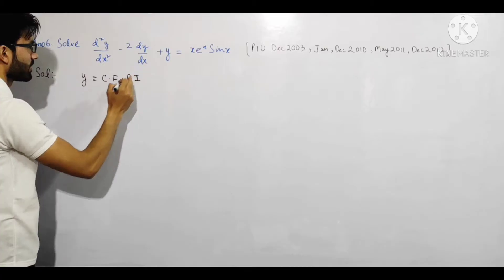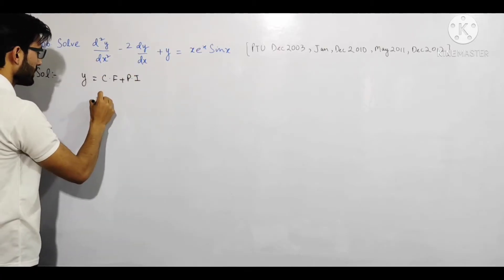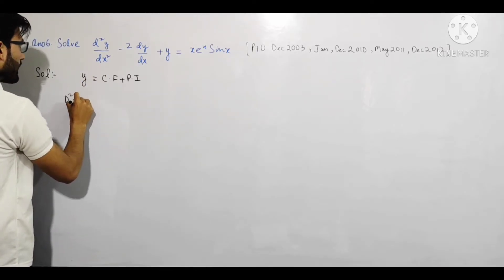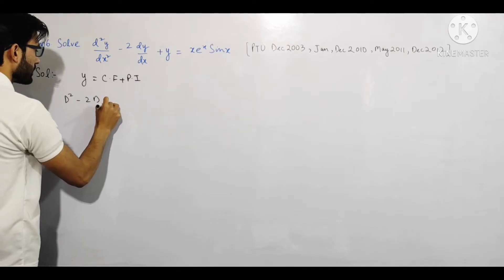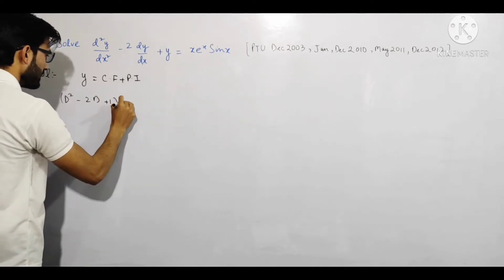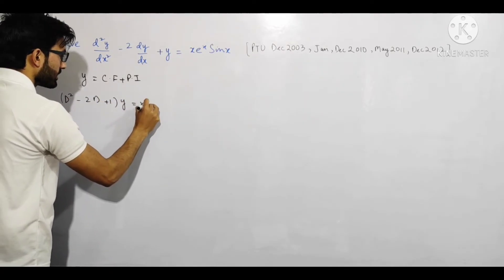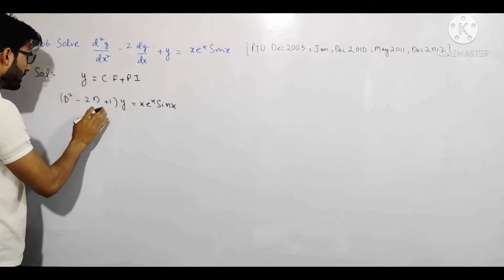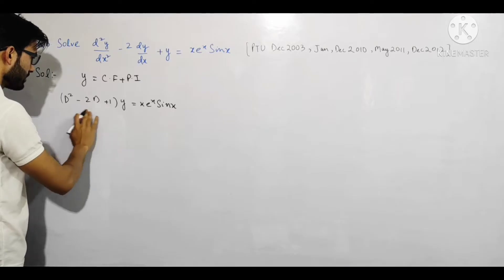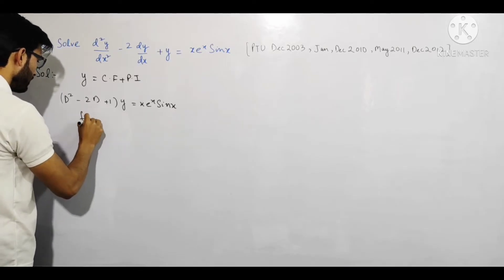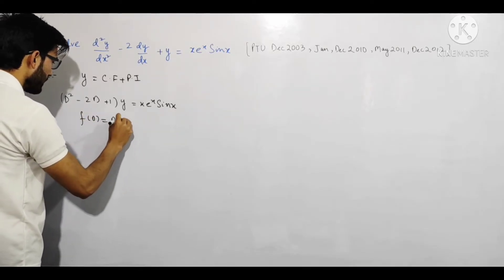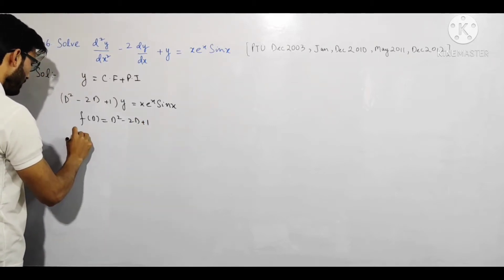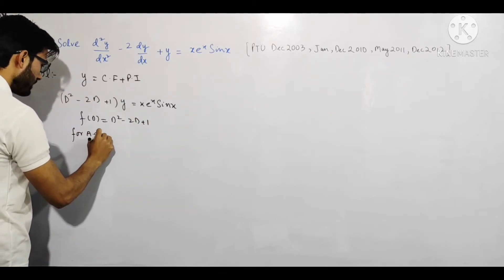Pehle is differential equation ko symbolic form mein likhte hain. Yeh ban jata hai: (D² - 2D + 1)y = xe^x sin x. Toh f(D) = D² - 2D + 1. Ab auxiliary equation ke liye hum f(D) = 0 put karenge.